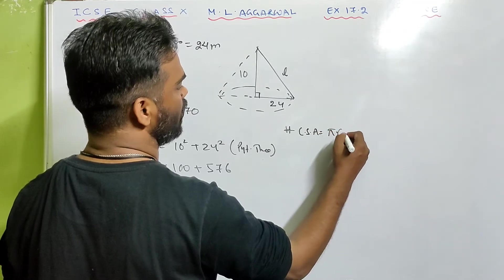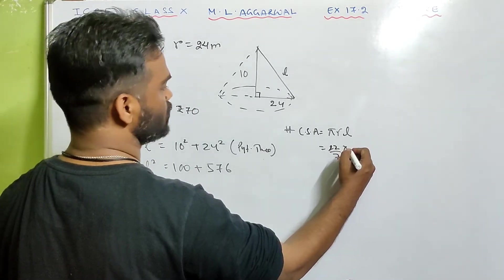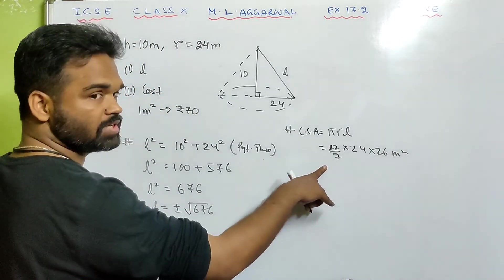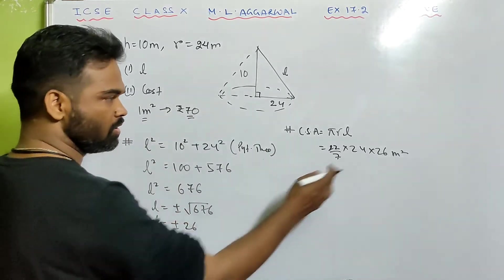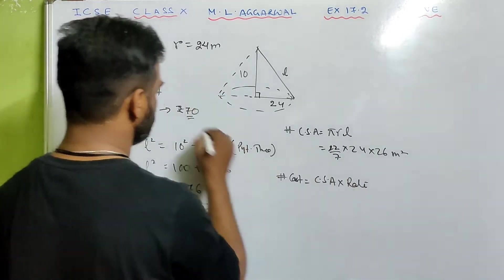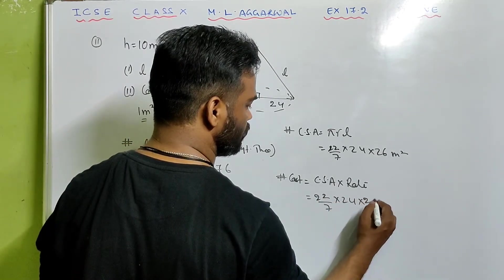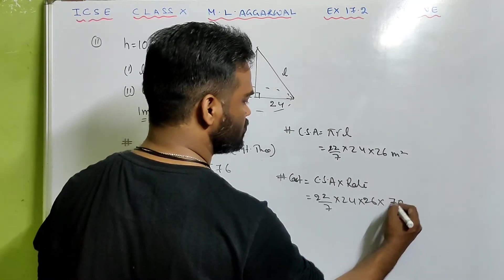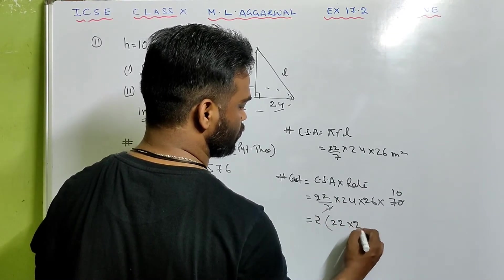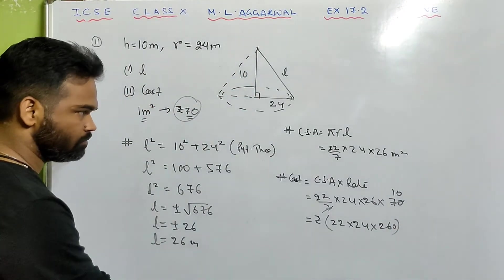Curved surface area = pi r l = 22/7 × 24 × 26. Total cost = CSA × rate = 22/7 × 24 × 26 × 70. Since 70/7 = 10, this becomes 22 × 24 × 26 × 10 = 22 × 24 × 260. Multiply to get the final answer.